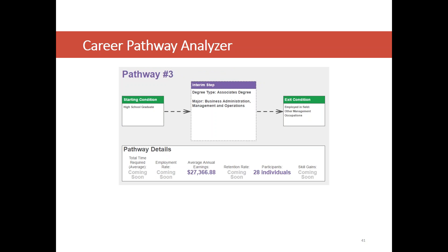For an interesting comparison, our third highest paying pathway is an associate's degree in business administration — same major, different degree type — and that gives average annual earnings of about $27,000. We can see a $15,000 gap between the associate's degree and the bachelor's degree within that occupation, even though the major stays the same. We're seeing some interesting and exciting results already.